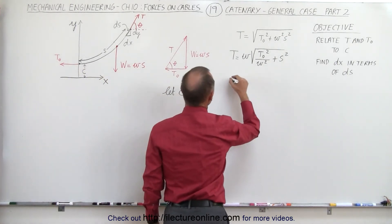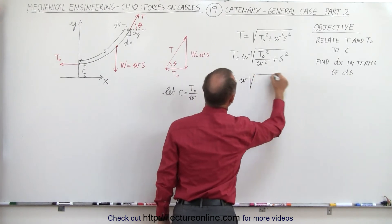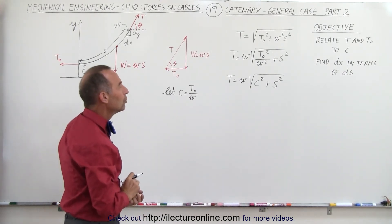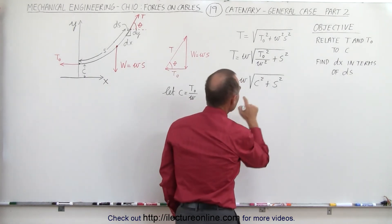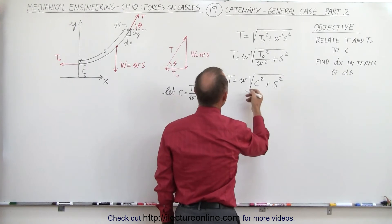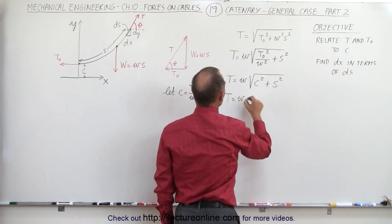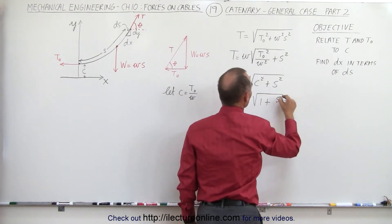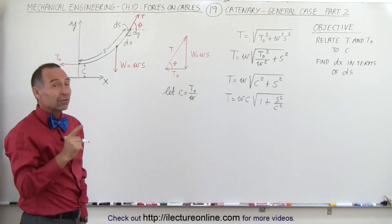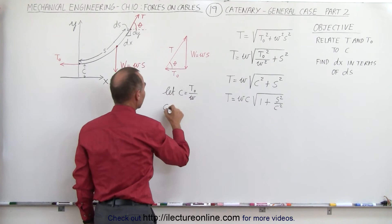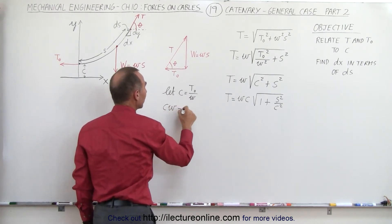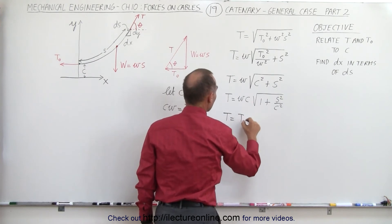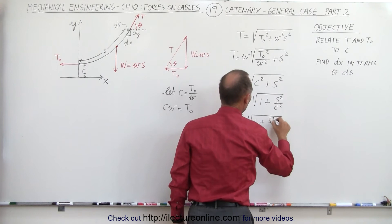Making that substitution, T can now be written as W times the square root of C squared plus S squared. We then factor out C squared, giving T equal to W times C times the square root of 1 plus S squared divided by C squared. Since C times W equals T sub knot, we replace that product, and so T equals T sub knot times the square root of 1 plus S squared over C squared. We now have a relationship between the constant C, the tension at the lowest point, and the tension at any other point on the cable.